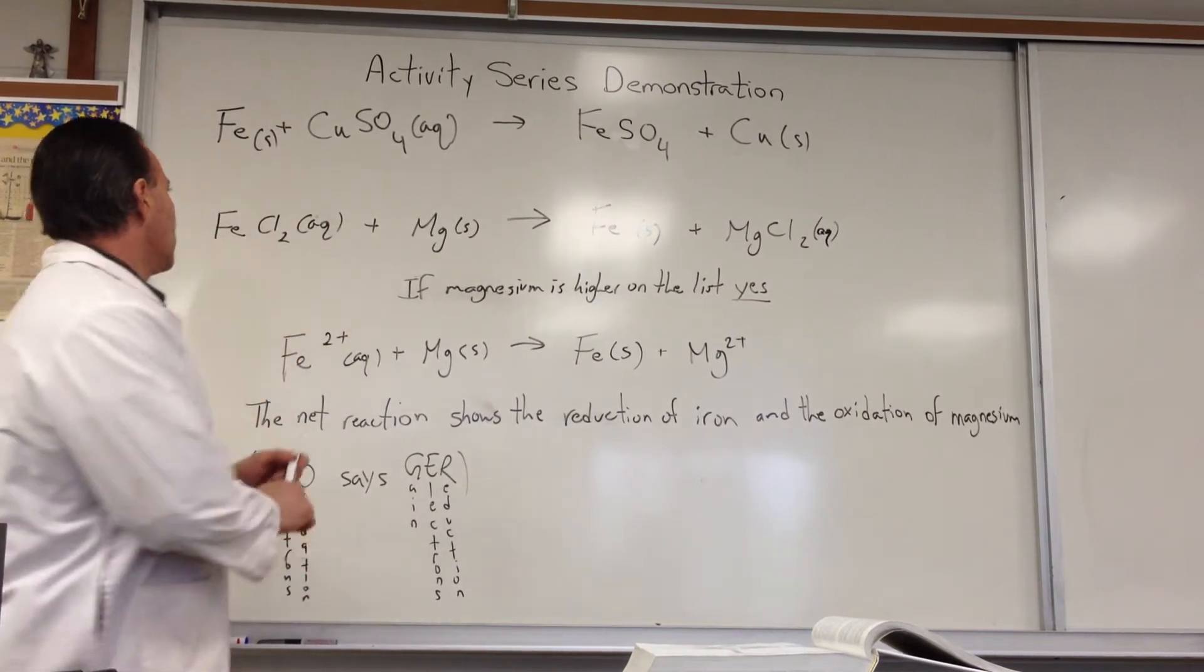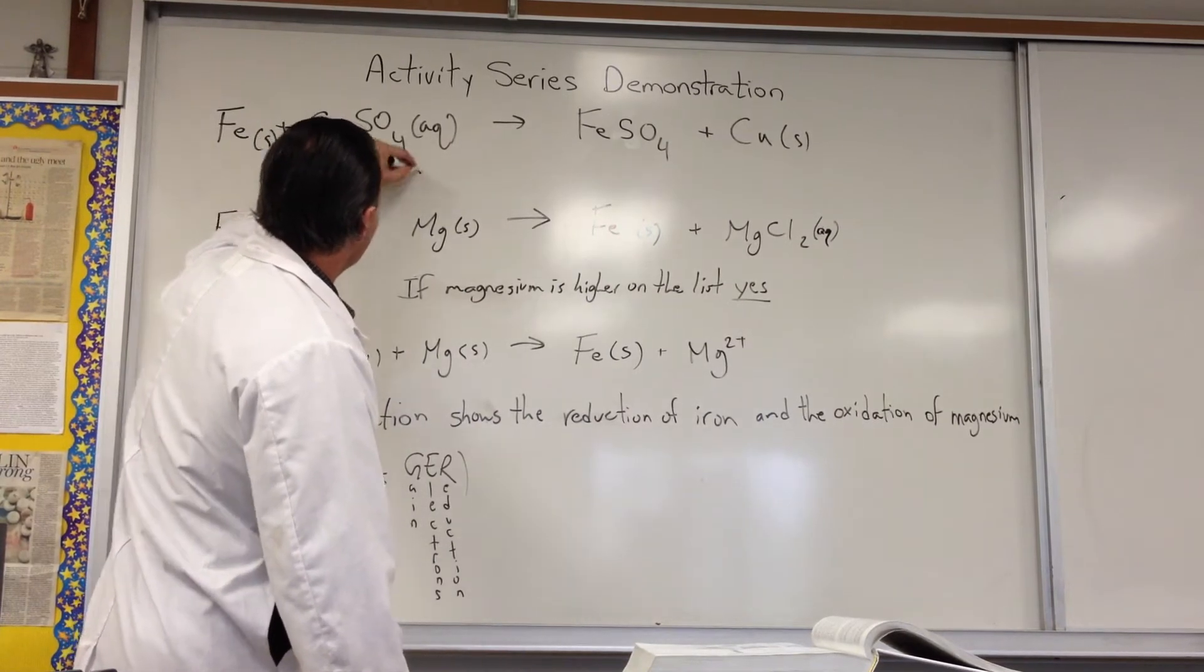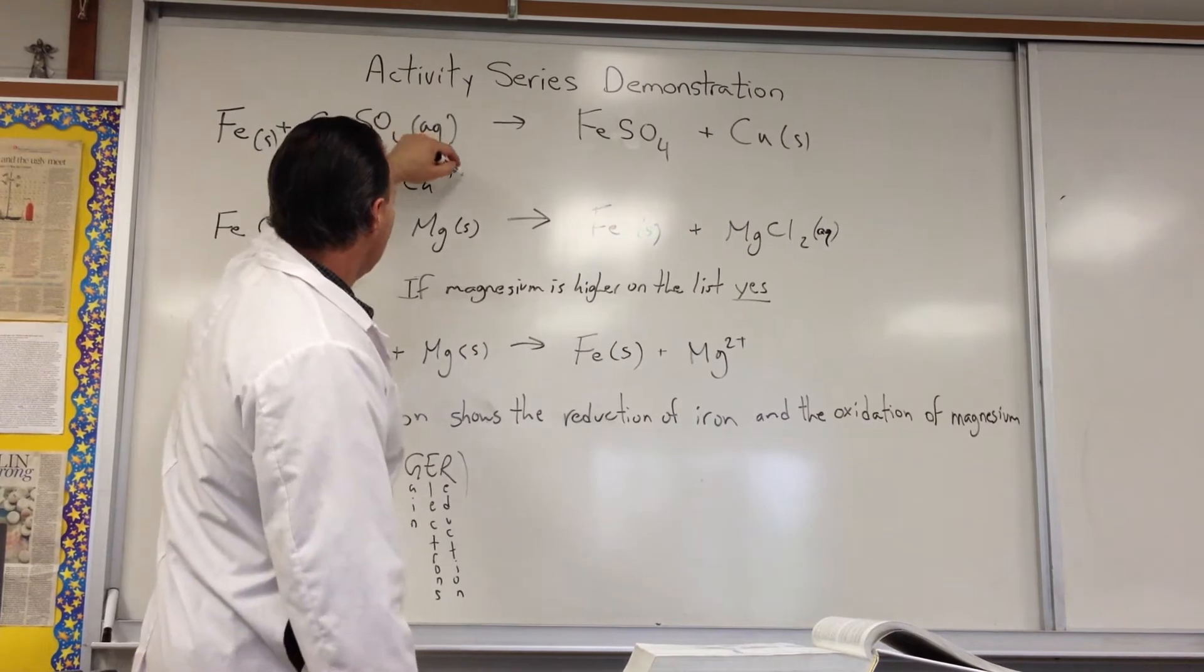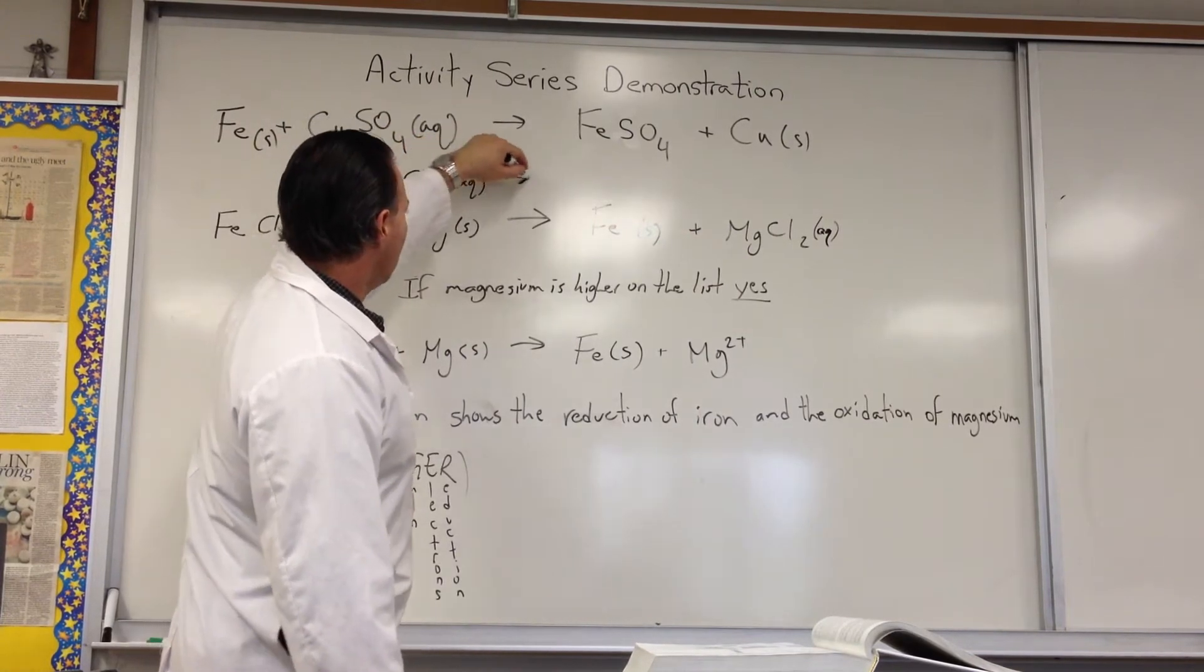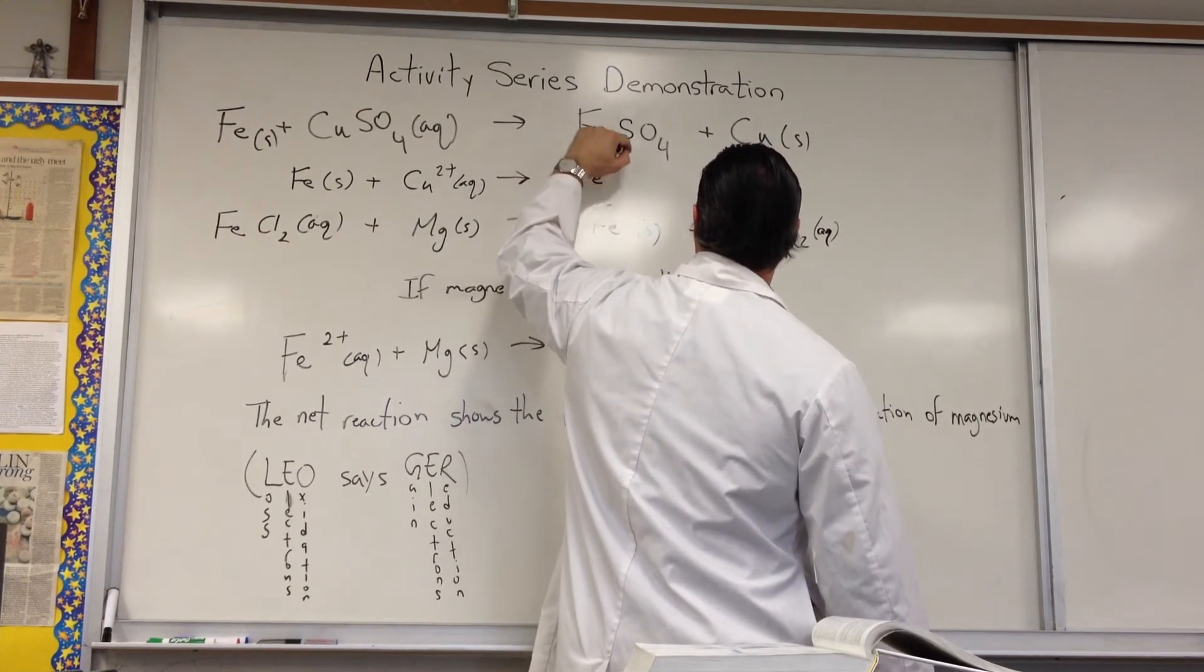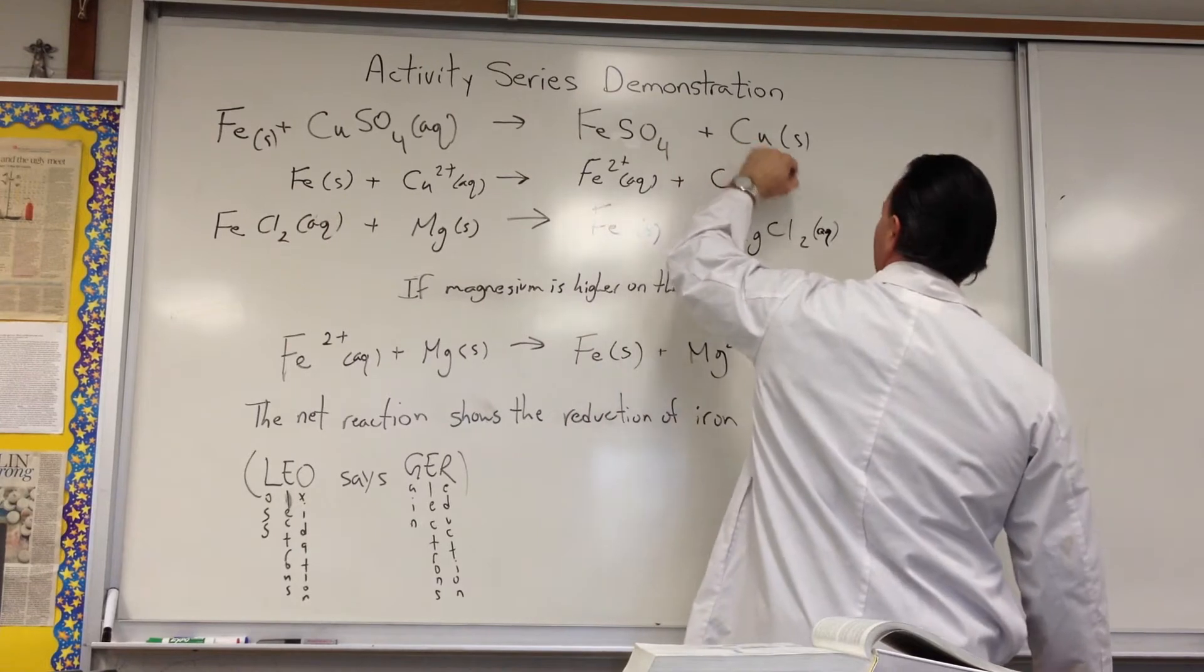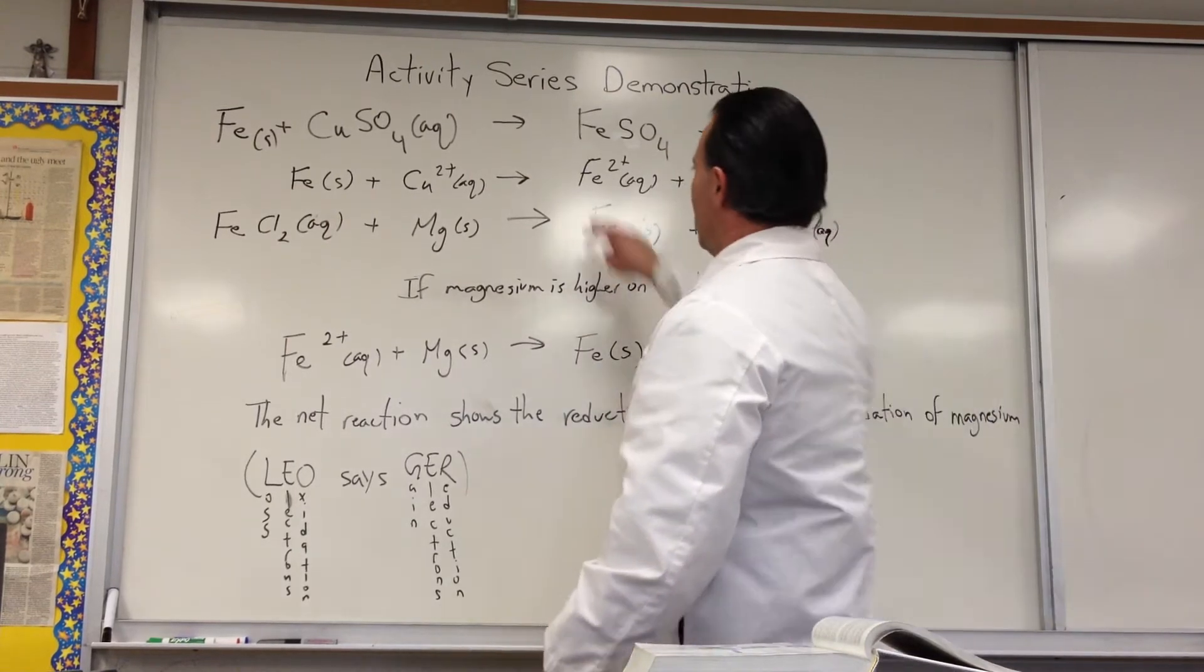The net reaction is that iron will be oxidized to become the ferrous ion and the copper will become solid. That's the net reaction for this.